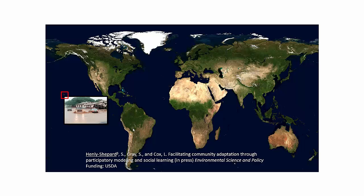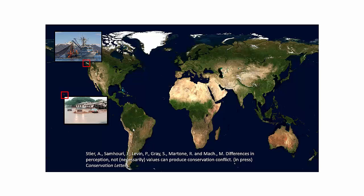We've used Mental Modeler in several different case studies across the world toward different ends, trying to capture the knowledge of different stakeholders for collaborative decision making. We've done this in relation to tsunami hazards in communities on the North Shore of Hawaii, so they can come together, model their community, and understand how they're going to be impacted by threats like tsunamis. We've also used it looking at how expertise differs about ecosystem dynamics with native peoples, First Nations tribes, Canadian fishery managers, and other expert groups in Canada.